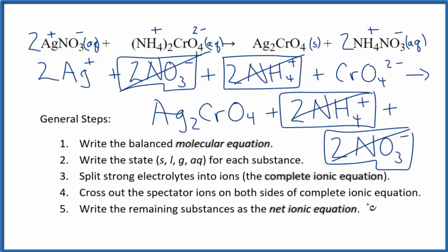What's left, that's the net ionic equation for AgNO3 plus (NH4)2CrO4. Let me clean this up, write the states. We'll have our net ionic equation.